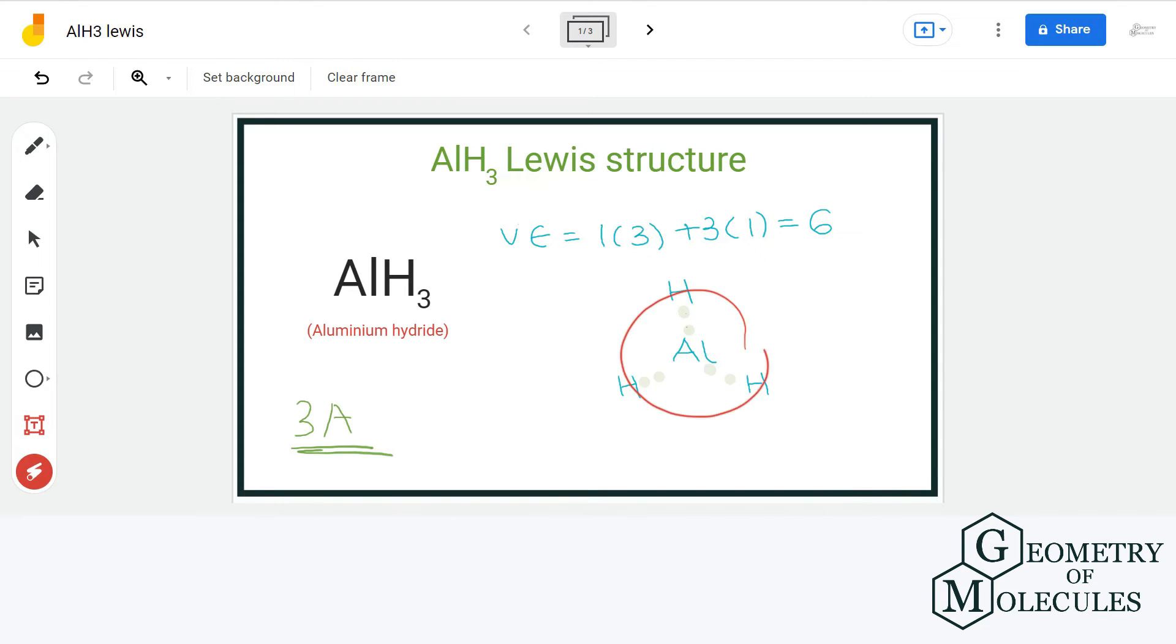AlH3 is one such example. Now all the atoms have complete outer shells in this Lewis structure, so let us count the formal charge of each atom just to confirm that this is the best possible Lewis structure.